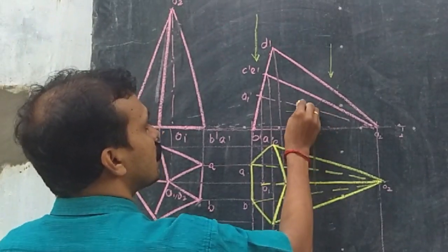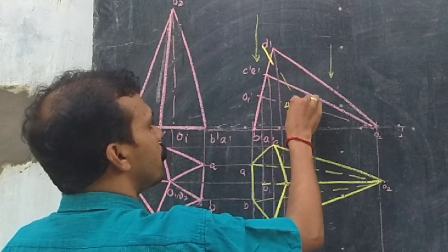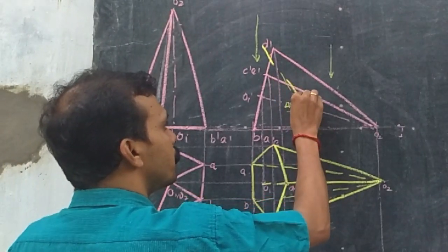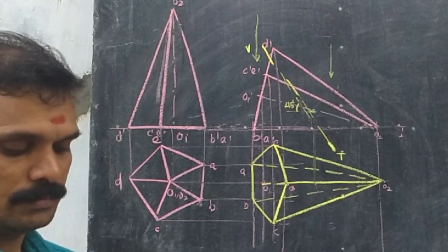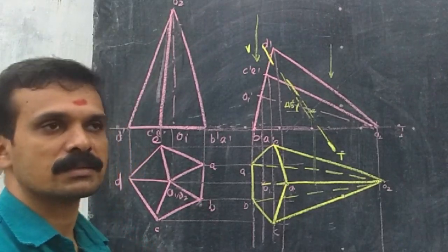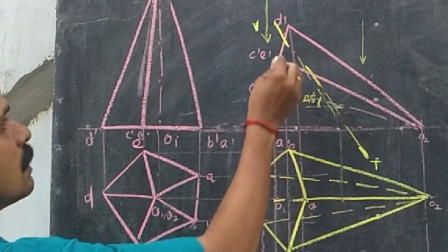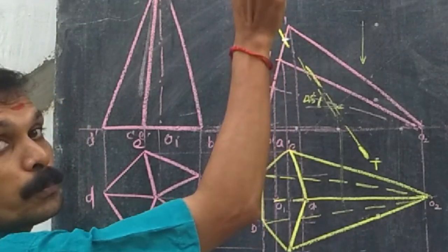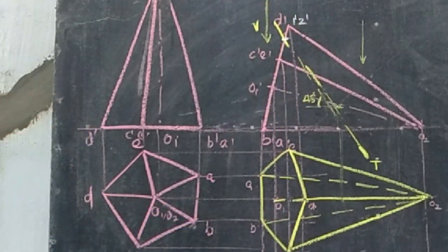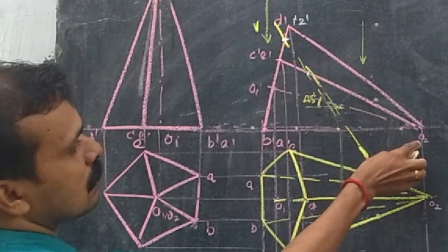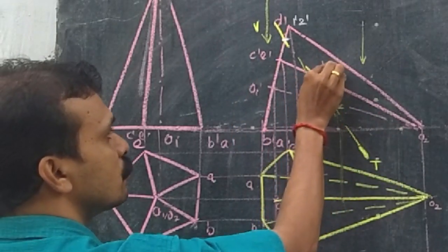Through the midpoint, take an inclination of 45 degrees and obtain the intersection points. At an inclination of 45 degrees, we can see it intersects here at two points — because this is a base edge CD and ED — so we get 1-dash and 2-dash. Similarly, it intersects here where slant edges O2C and O2E pass through that point, giving us 3-dash and 4-dash.